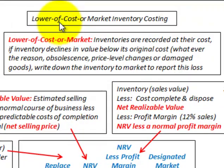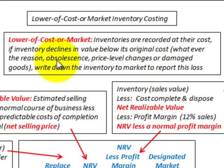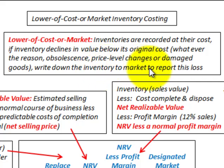We're going to be going through the lower cost or market inventory costing — a general application of this rule. This is where inventories are recorded at their cost. If the inventory declines in value below its original cost for whatever reason — obsolescence, price changes, or damaged goods — you write down the inventory to the market value to report this loss.